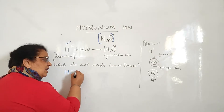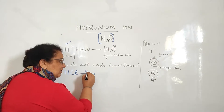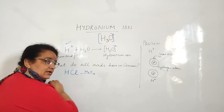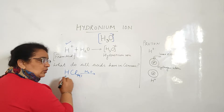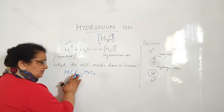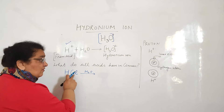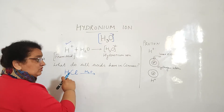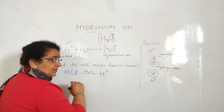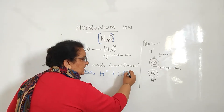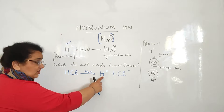Let's look at your acid: hydrochloric acid. When it comes in contact with water — we can also write 'aqueous'; both are the same thing. So hydrochloric acid, when it is mixed with water, it releases H-ion and chloride ion. So all acids release H-ion.